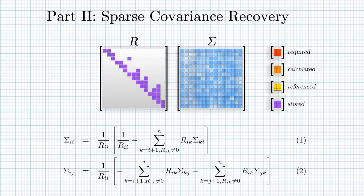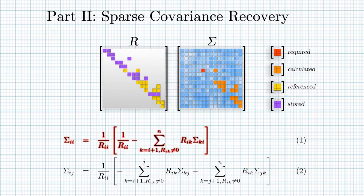The elements of the covariance matrix can be calculated recursively from elements of the factor R. The diagonal elements are calculated using formula 1, and the off-diagonal elements are calculated using formula 2. We can see that, in order to calculate a single element, multiple other elements need to be calculated.